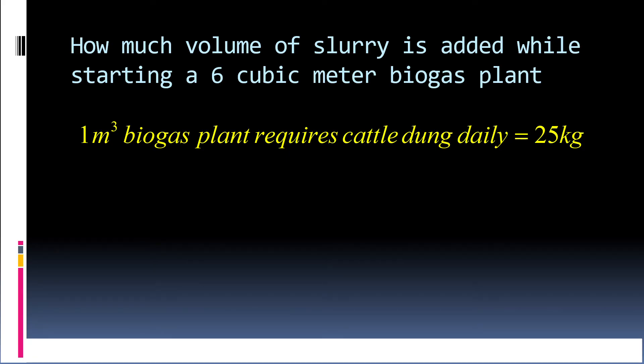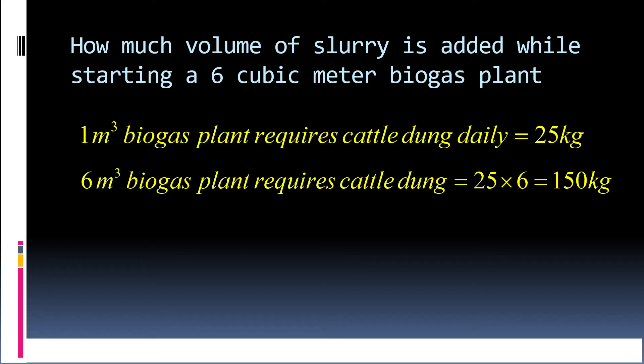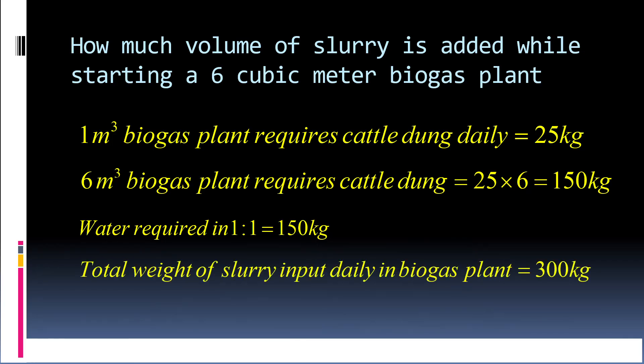6 meter cube biogas plant requires cattle dung 25 times 6, equals 150 kg. Water added in 1:1 ratio, so we will be adding 150 kg of water. So total weight of the slurry which is required daily in biogas plant will be 300 kg.